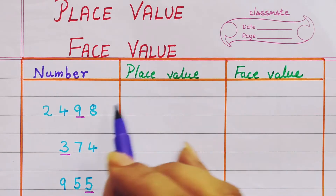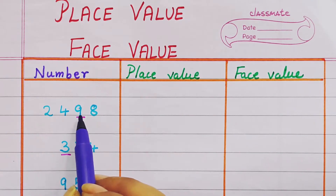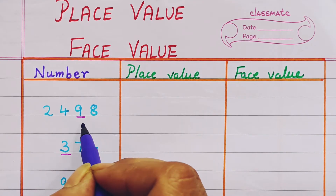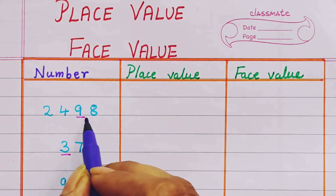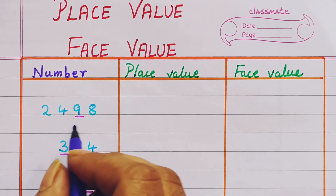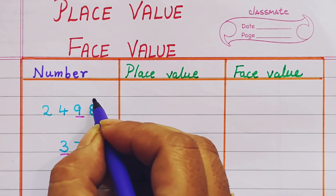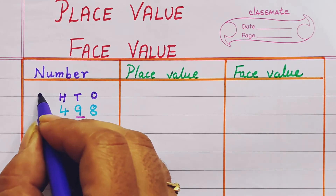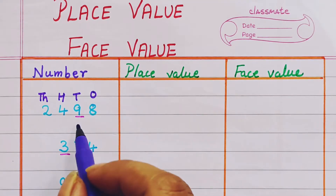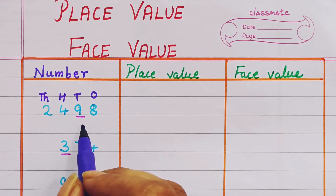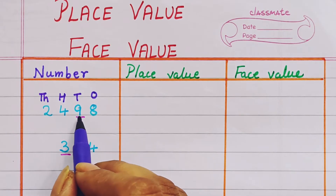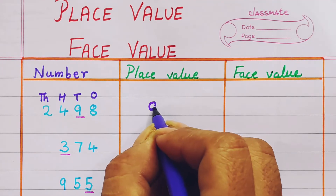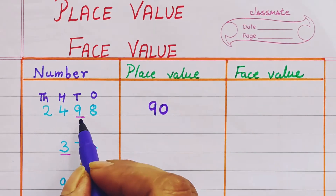Let's see the first example: 2498. Here we have to find out the place value of the underlined number. Place value means we have to see which place the number is in. Let's give the places: 8 is in the ones place, 9 in the tens place, 4 in the hundreds place, and 2 in the thousands place. So 9 is present in the tens place.